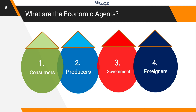We have four economic agents: consumers, producers, government, and foreigners. If there are no consumers, there is no need for production, because consumption must exist for production. If we have consumers and producers, the government facilitates consumption and production. And if we don't have foreigners, we cannot fully sustain production. So we need all four agents to run the economy smoothly.